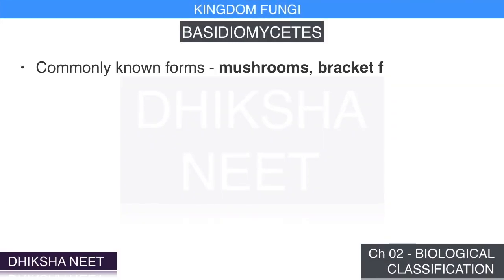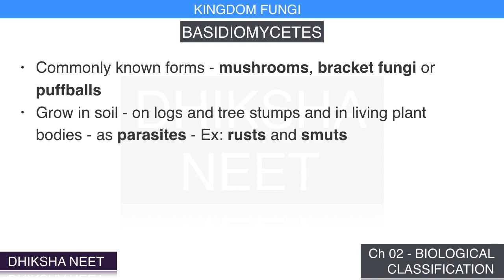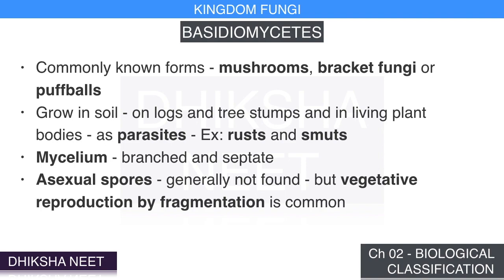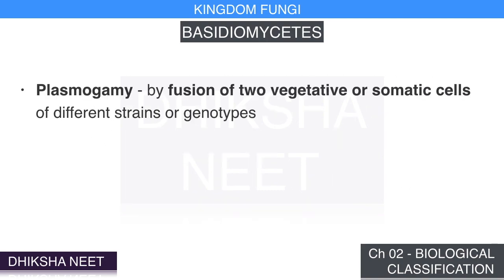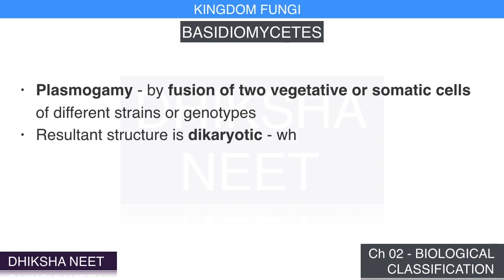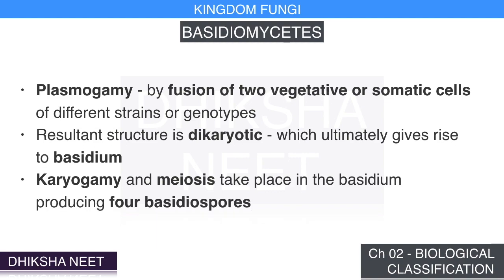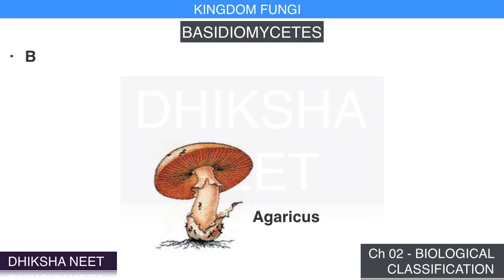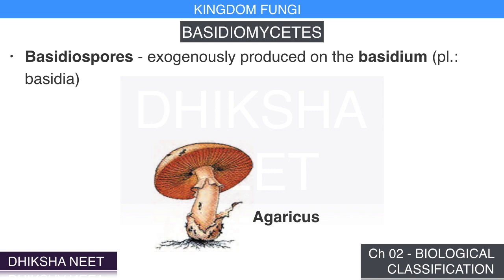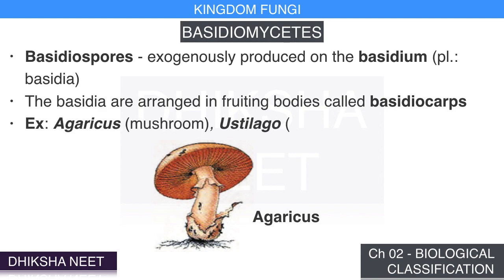Basidiomycetes: commonly known forms are mushrooms, bracket fungi, and puffballs. They grow in soil, on logs and tree stumps, or in living plant bodies as parasites, e.g., rusts and smuts. Mycelium is branched and septate. Asexual spores are generally not found; vegetative reproduction by fragmentation is common. Sex organs are absent, but plasmogamy is brought about by fusion of two vegetative or somatic cells of different strains. The resultant dikaryotic structure gives rise to basidia, where karyogamy and meiosis produce four basidiospores exogenously. Basidia are arranged in fruiting bodies called basidiocarps. Common members are Agaricus (mushroom), Ustilago (smut), and Puccinia (rust fungus).